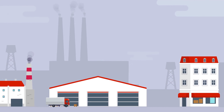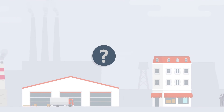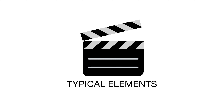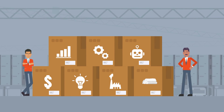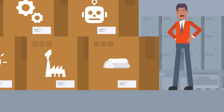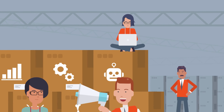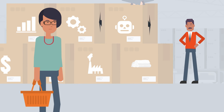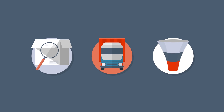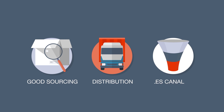We hear the supply chain being spoken about a lot, but what does it really mean? This short video explainer will help you to understand the supply chain concept and its typical elements. A supply chain is a network of individuals, organizations, resources, activities, and technology involved in the synchronization of product and information flow between raw material suppliers and end customers. In a more simplistic form, it is about optimizing and developing a smarter goods sourcing, distribution, and sales canal process.